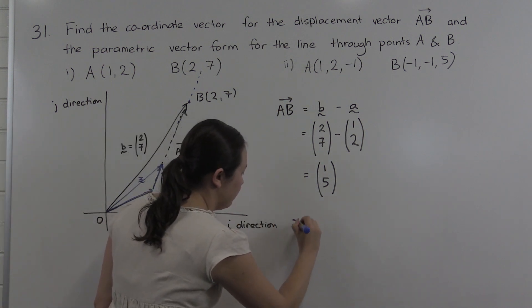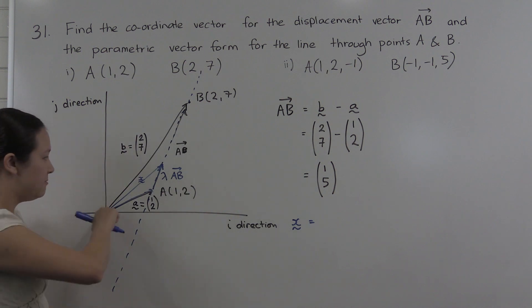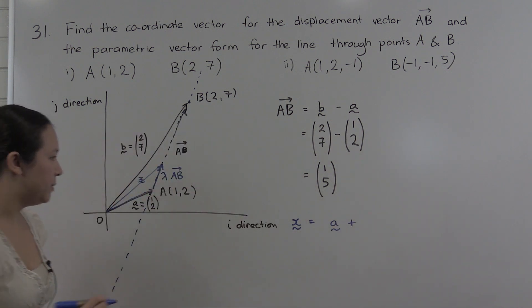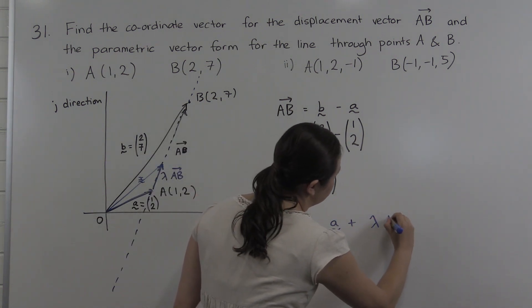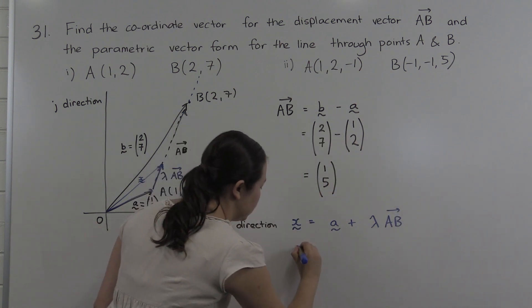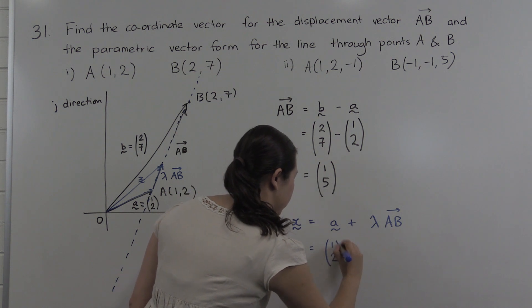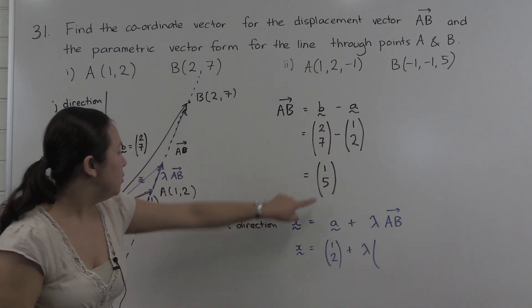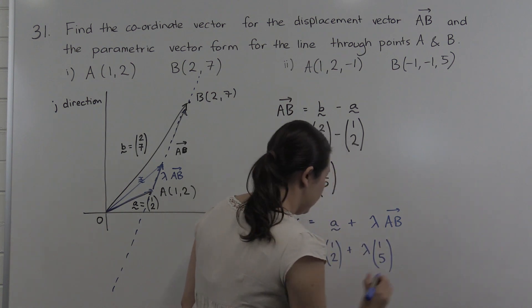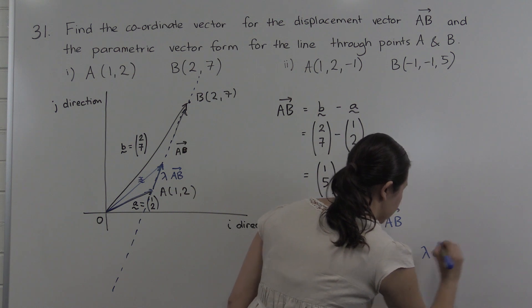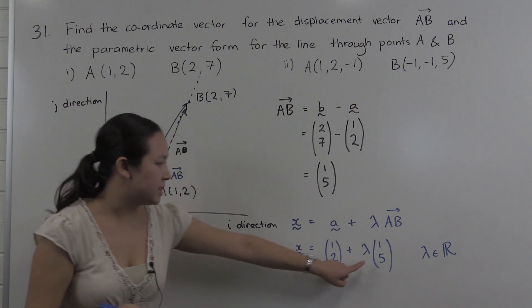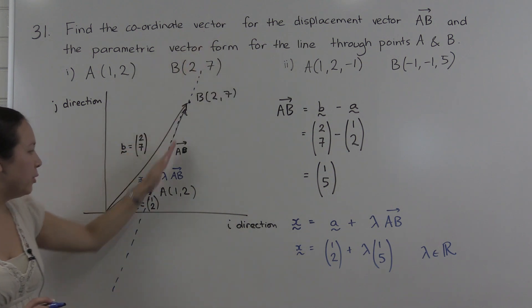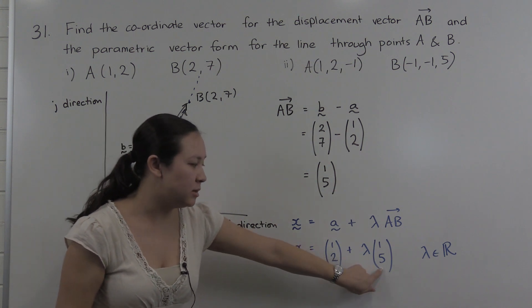So any position vector for a point on the line looks like a point that it passes through, plus a scalar multiple of a vector parallel to the line. A point on the line is (1, 2) — we could also use (2, 7) — plus a scalar multiple lambda of AB, which is (1, 5), because that's parallel to the line. Lambda must be a real number for this to be a scalar multiple. This is the parametric vector form for the line through AB: any point on the line looks like (1, 2) plus lambda times (1, 5).